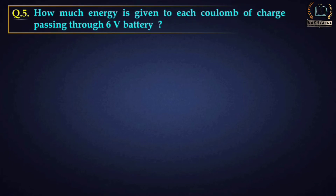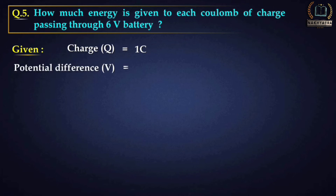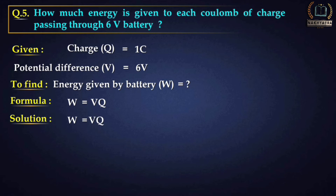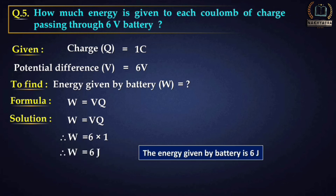Question 5: How much energy is given to each Coulomb of charge passing through a 6-volt battery? Given: Q = 1 C, V = 6 V. We have to find energy W. Formula: W = V × Q. Putting the values: W = 6 × 1 = 6 joules. The energy given by the battery is 6 joules.